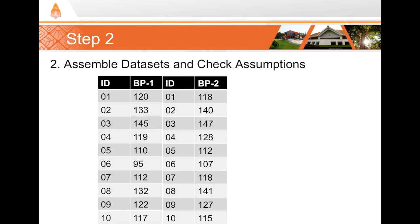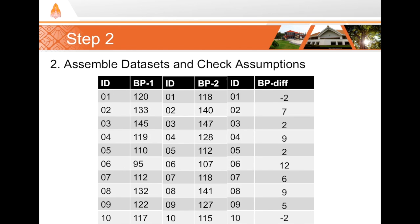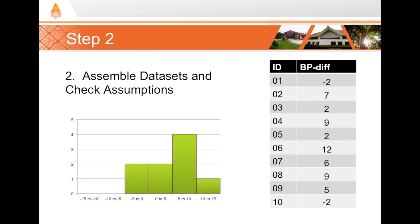The next thing is step two, which is assembling our data set and checking for assumptions. In this case we actually have to create a new data set that is our differences. We subtract the after blood pressure from the before. For example, we see that the blood pressure in the first participant decreased by two millimeters mercury, and so on. Now we're going to use this data set as our differences data set, and that'll be the one that we use within the t-test computations.